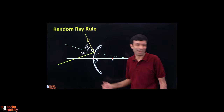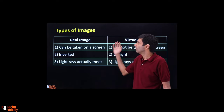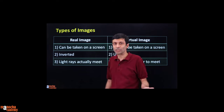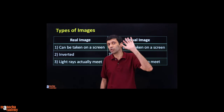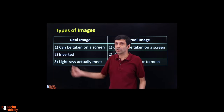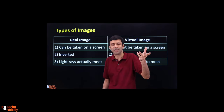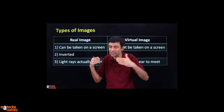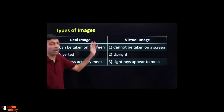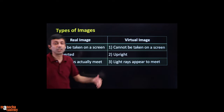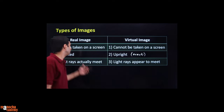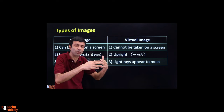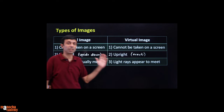Images formed by mirrors are of two types. A real image can be captured on a screen — like a movie projector — and is always inverted. Light rays actually meet at the point of a real image. A virtual image cannot be captured on a screen, is always erect, and light rays only appear to meet — they don't actually converge at that point.